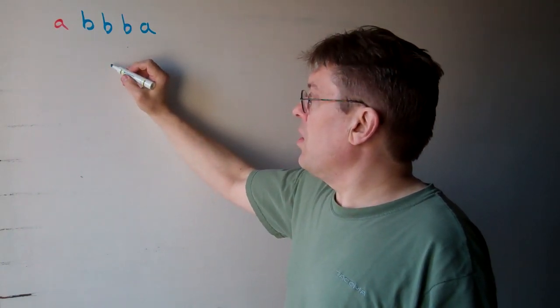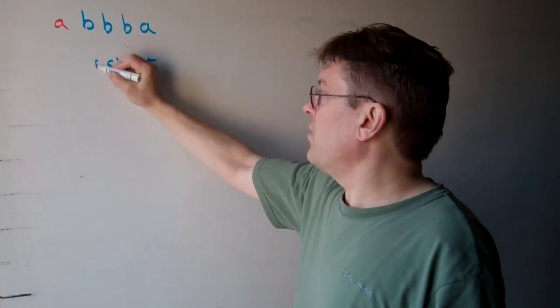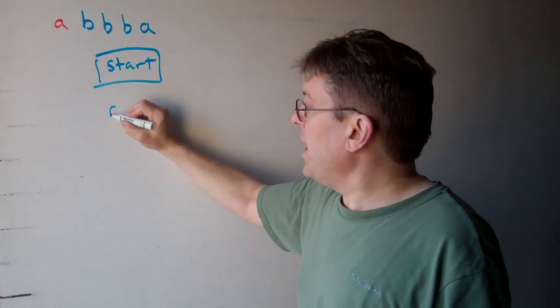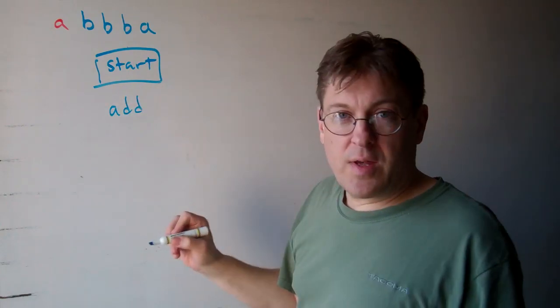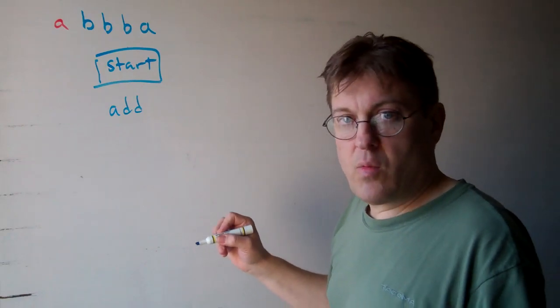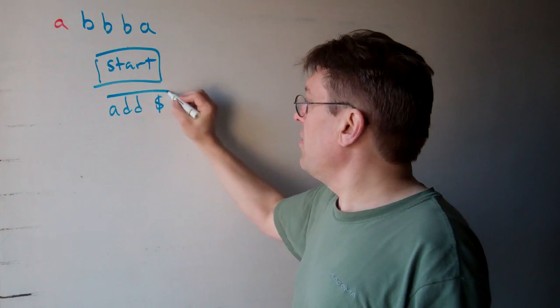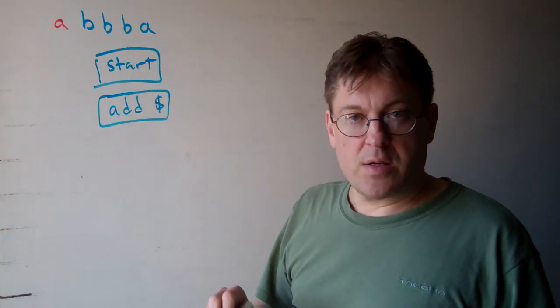Basically we will start - it's always the first part of the Post machine - and we're going to add some kind of a character to indicate where the end of the string is. And so we're just going to call it a dollar sign. We're going to add a dollar sign.